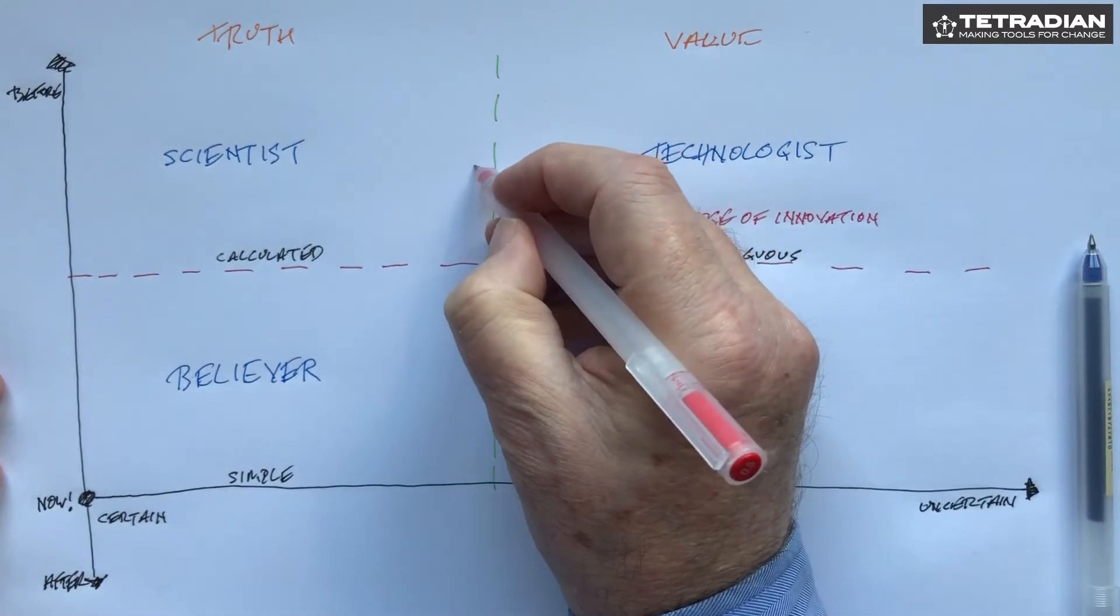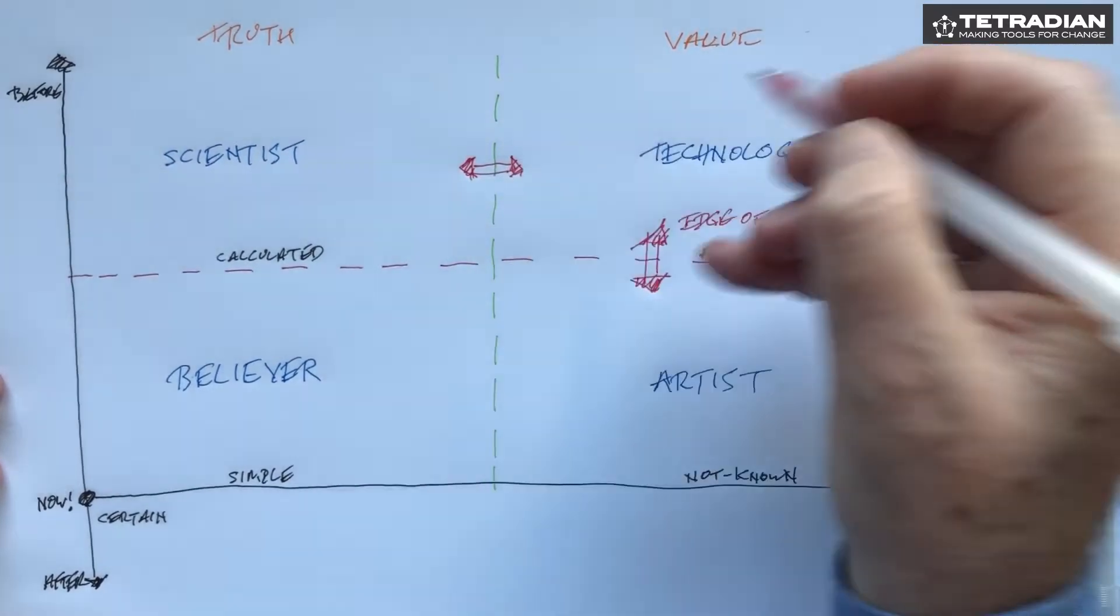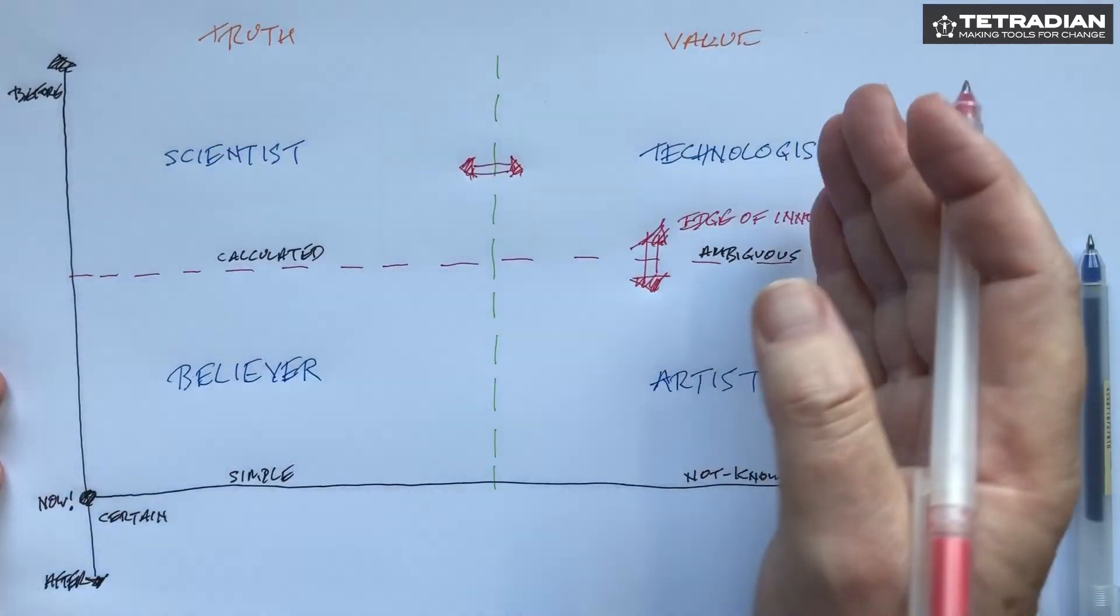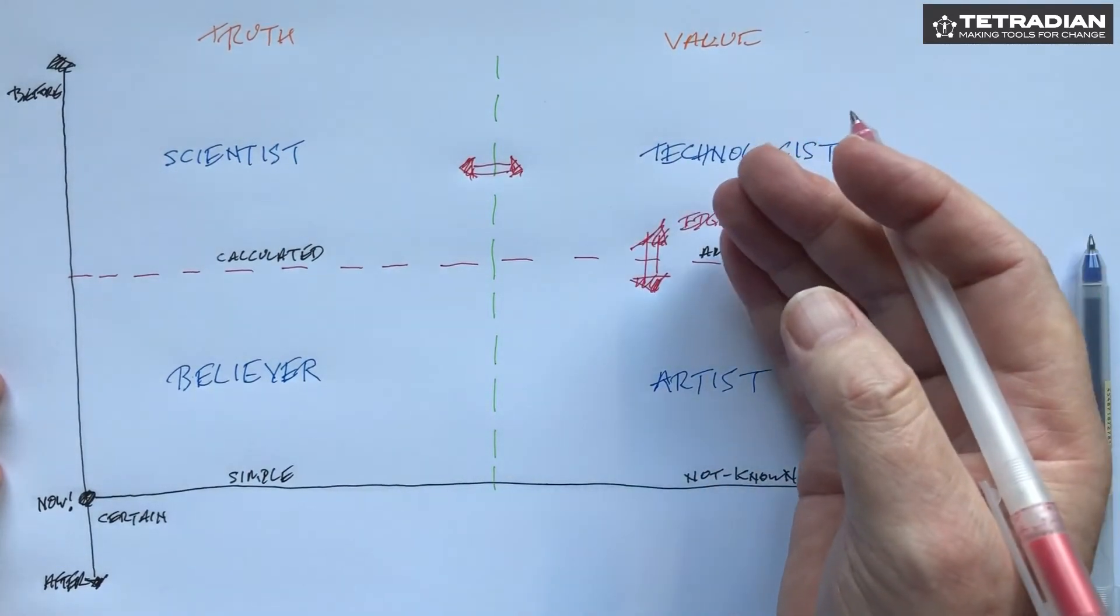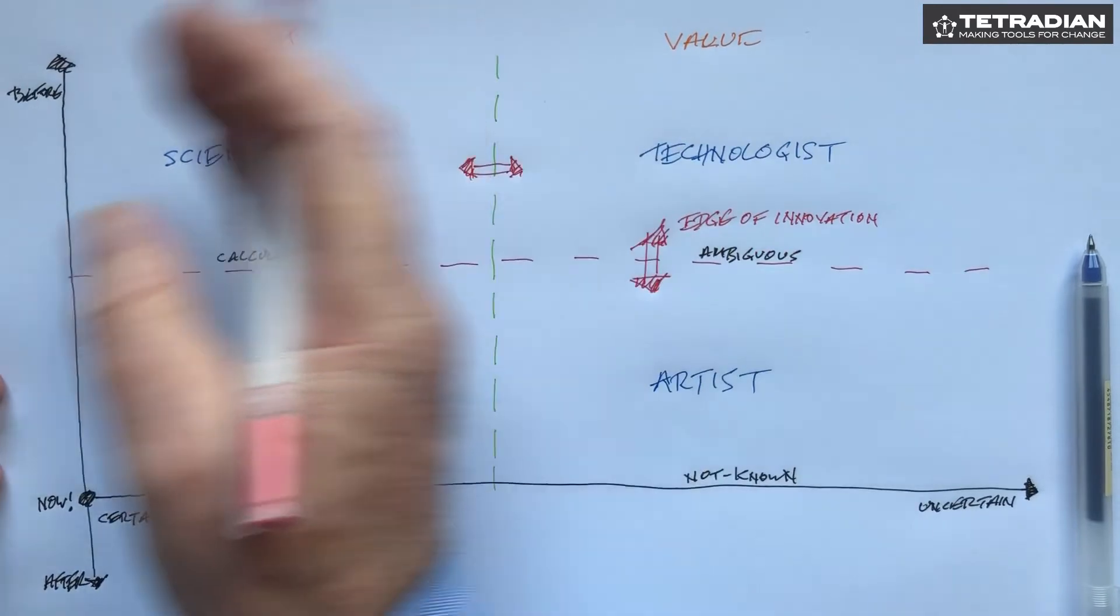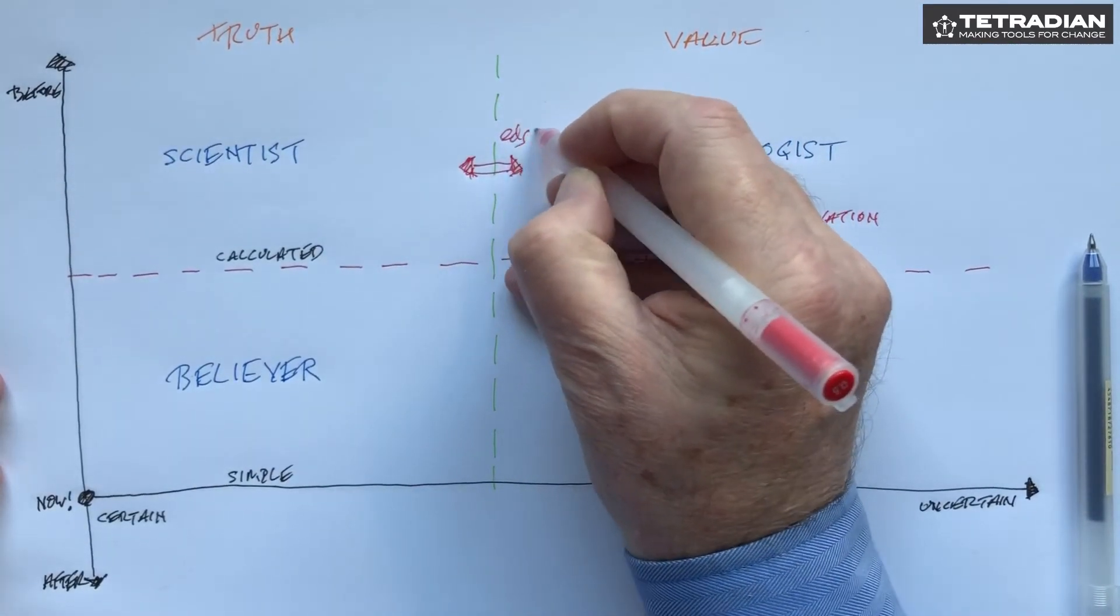This one is the edge of uncertainty. Again we bounce backwards and forwards. The job of those two is to reduce uncertainty, is to identify what has to remain complex and will always remain uncertain versus things that extract out of it, the things that can be made more certain. So that's an edge of uncertainty.